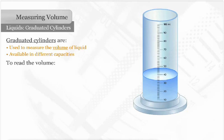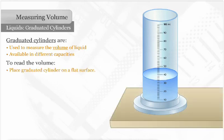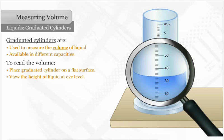To read the volume, place the graduated cylinder on a flat surface and view the height of the liquid at eye level. The liquid will tend to curve downward. This curve is called the meniscus.